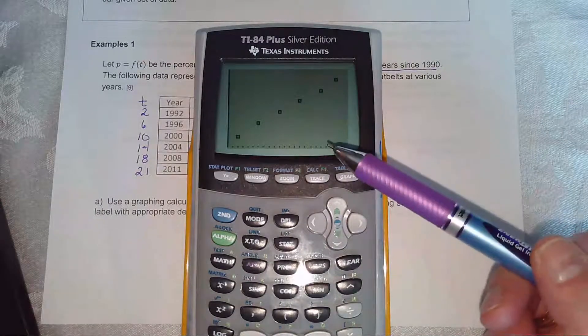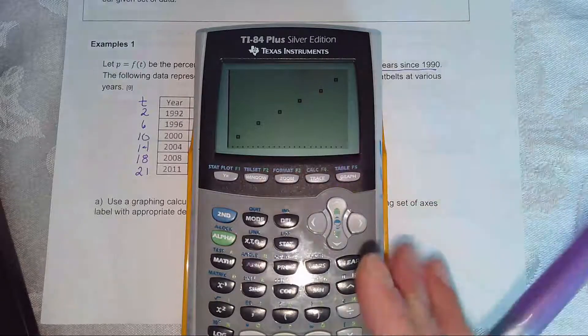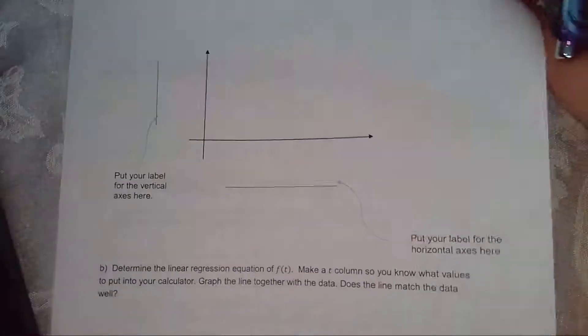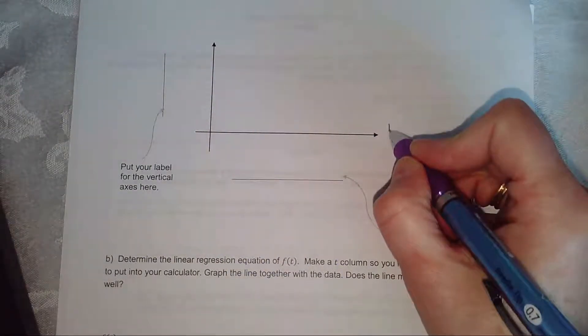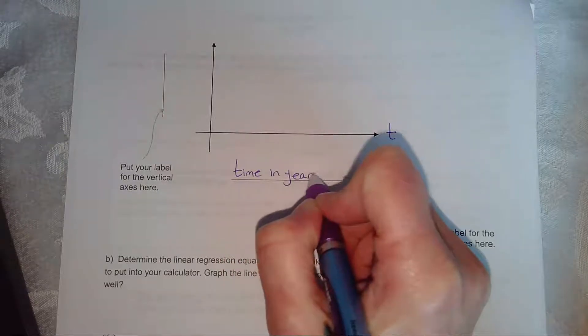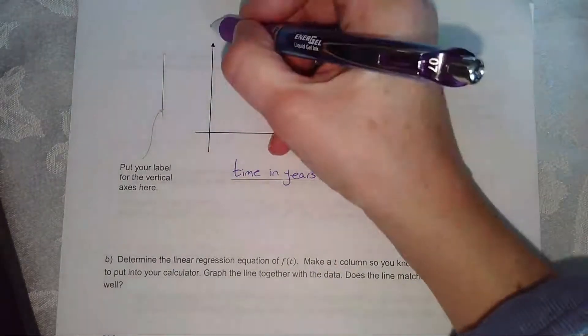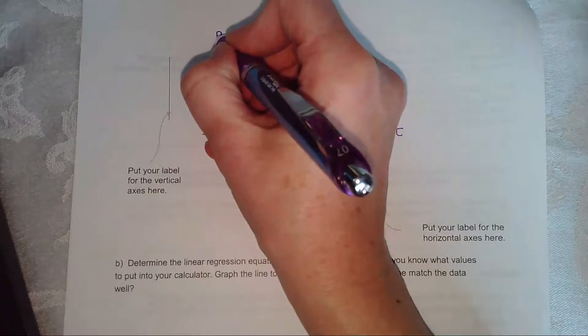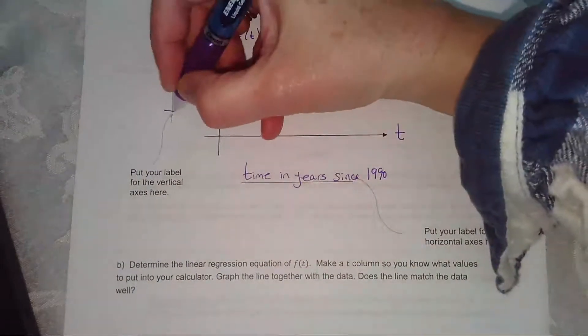So MyMathLab is going to ask you what the axes are going to be on the vertical and the horizontal. So if we flip the page, they're going to ask you to label what the horizontal would be. In this case, it's time, but it's time in years since 1990. That's on our horizontal. And on our vertical, I believe they called that p equals f of t. So we're going to call it p, which also you can I'll just pop f of t up there as well. And this was the percentage of Americans wearing seatbelts.